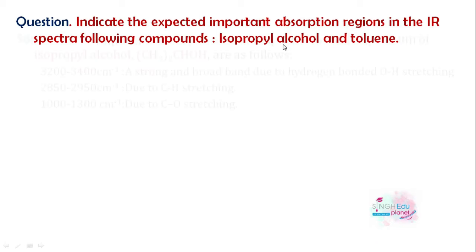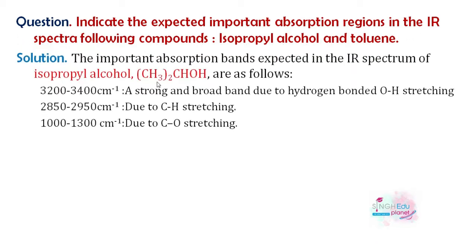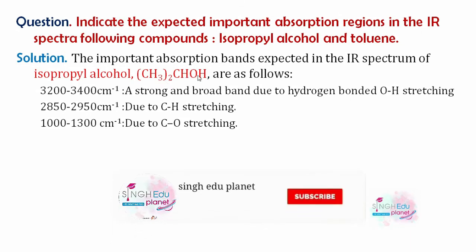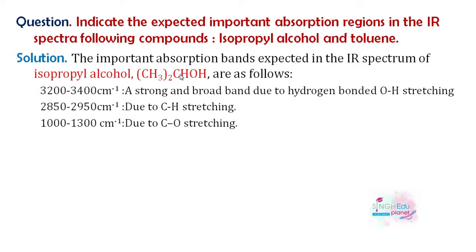First, we will discuss isopropyl alcohol. This is a secondary alcohol: CH3-CHOH-CH3. Since it is a secondary alcohol, hydrogen bonding will be present. With hydrogen bonding, the OH stretching band will be between 3200 to 3400 cm⁻¹. CH stretching will be between 2850 to 2950 cm⁻¹, and the C-O bond stretching will be around 1100 to 1300 cm⁻¹.